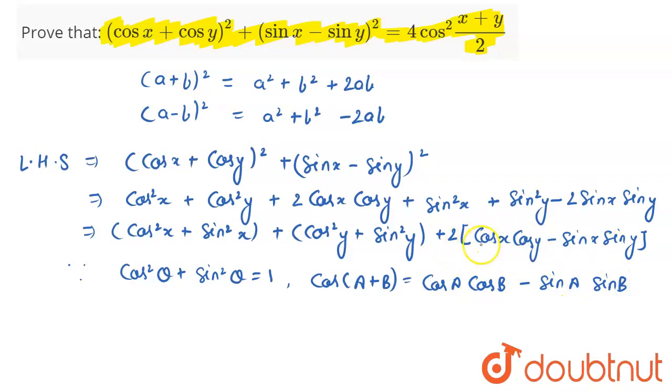Now, look here. If you observe, if I substitute A with x and B with y, this is nothing but cos(A + B). So basically, I can write this entire term as cos(x + y). In the next step, I am writing cos²x + sin²x = 1, plus this entire bracket again as 1, plus 2 cos(x + y).